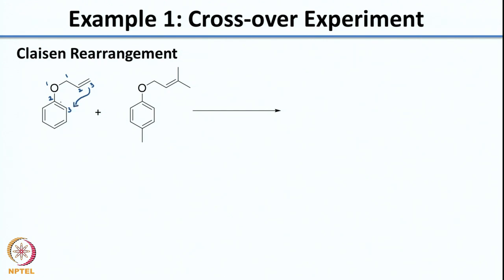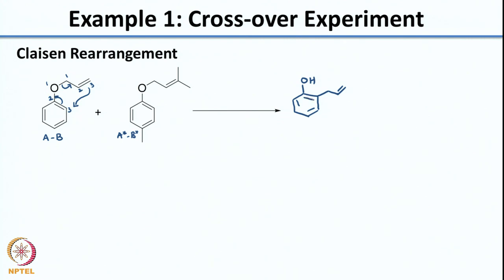Assuming no crossover and a concerted process, you have a 3,3-sigmatropic rearrangement. You can draw the arrows: this sigma bond cleaves. So this is your AB system and this is your A*B* system. The product from the intramolecular rearrangement of AB would be formed, which tautomerizes to give you the corresponding phenol. This is product CD.